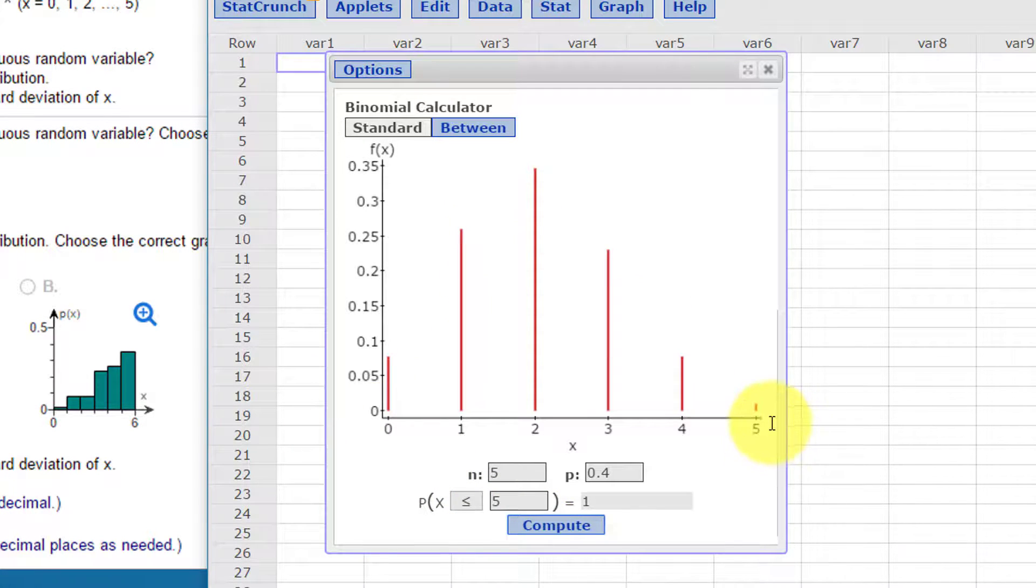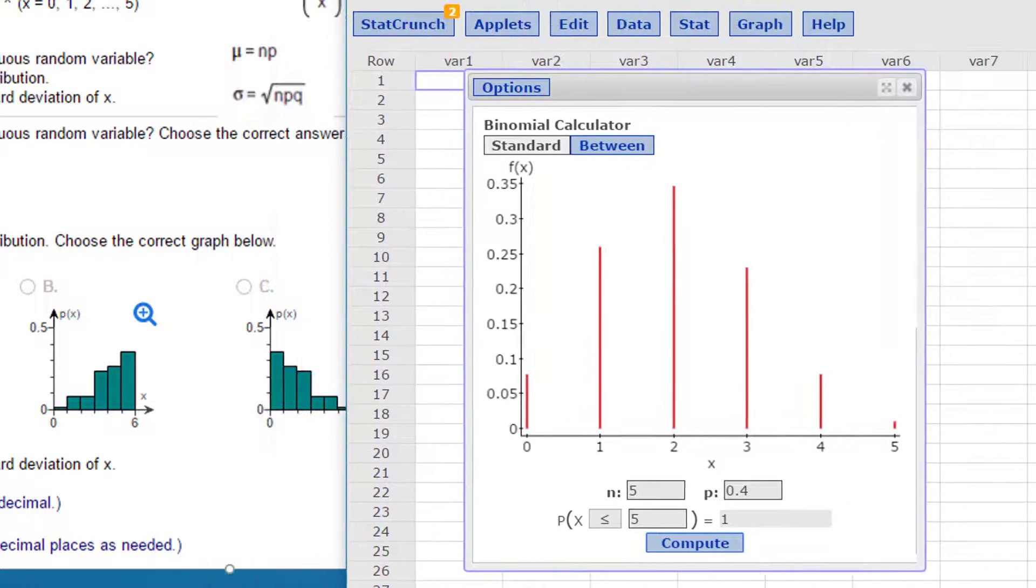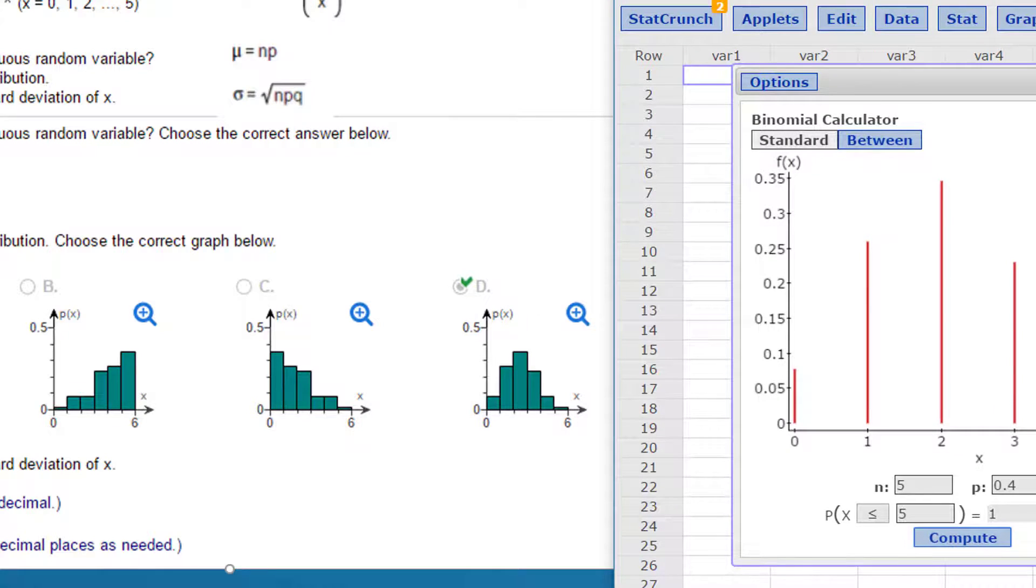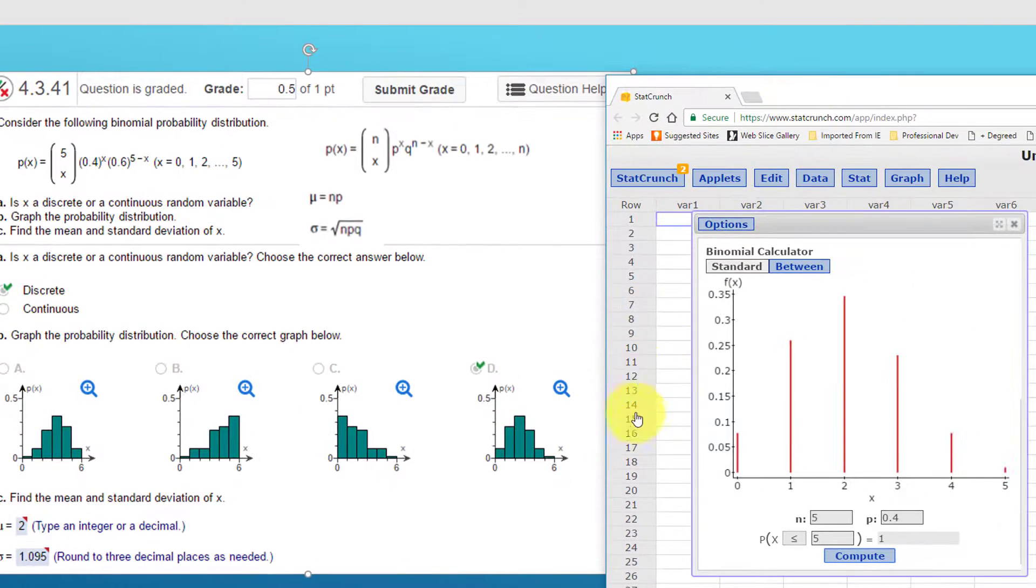and it will draw us the graph, the bar chart, column chart, or you can call it histogram if you want, of this binomial distribution from 0 to 5. And let's just drag over here so we can see our choices. And this doesn't look right because this is skewed to the left. And this is not bell-shaped skewed to the left. This is not bell-shaped skewed to the right. This is bell-shaped with a little skew to the right, which is what we have here. And so we would pick D for that.